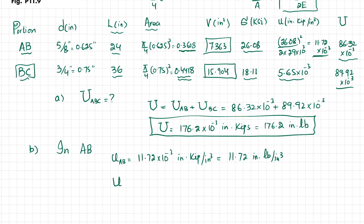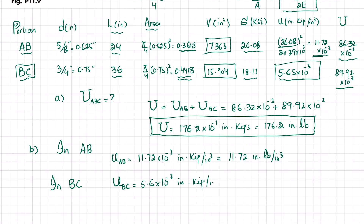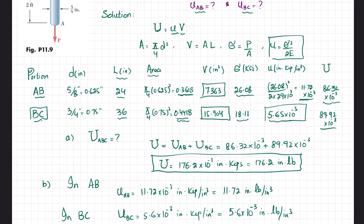The strain energy density of rod BC is 5.65 into 10 to the power minus 3 inch·kips per cubic inch, or equivalently 5.65 into 10 to the power minus 3 inch·pounds per cubic inch. This completes the answer to problem 11.9.